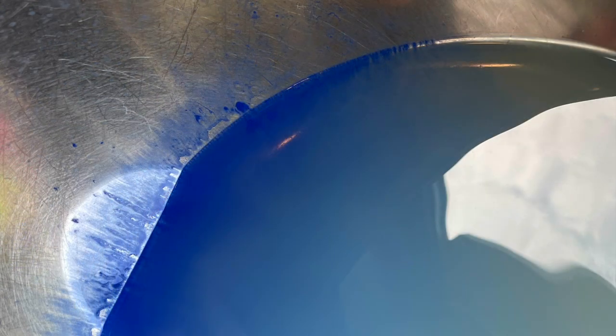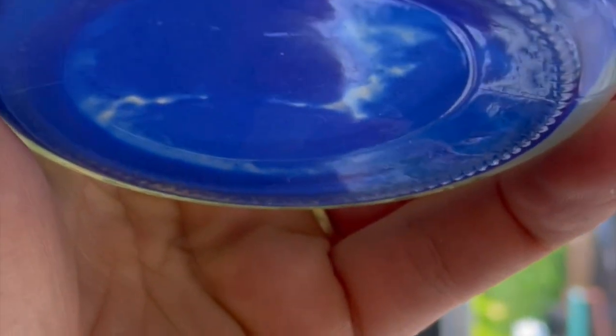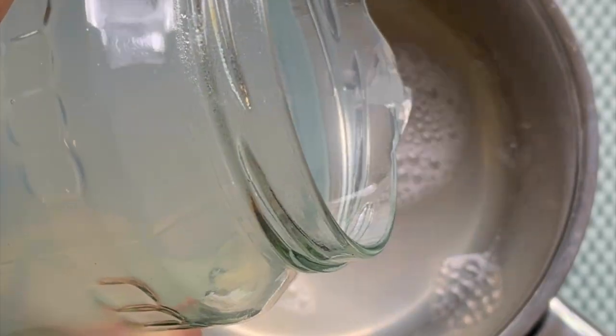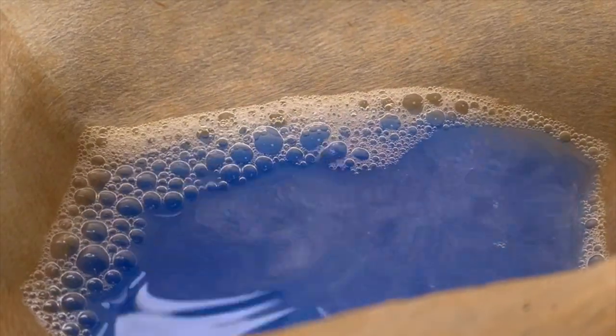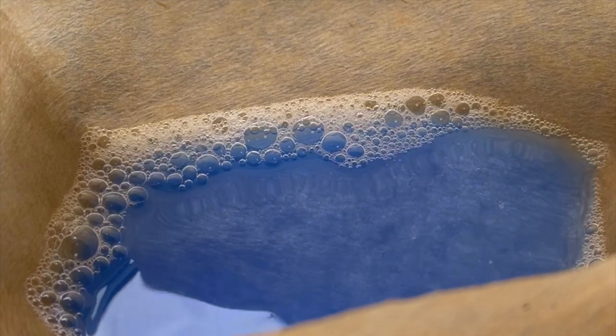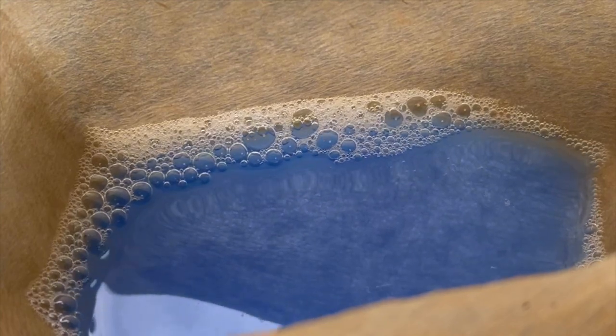As I pour off the water and the pigment sinks down to the bottom, I'm left with this beautiful deep ultramarine blue. I start sieving this again until I'm left with just the very fine powdered blue.